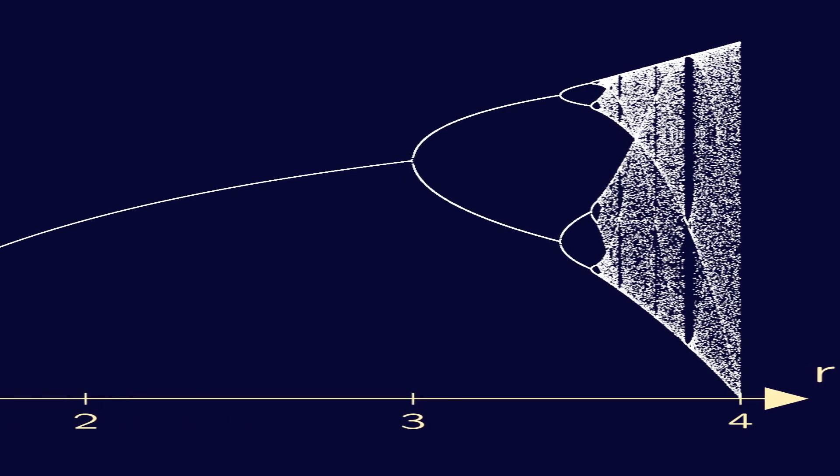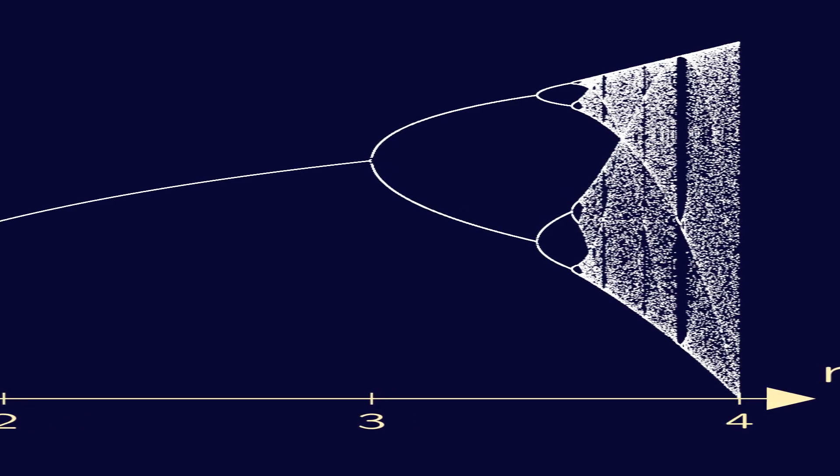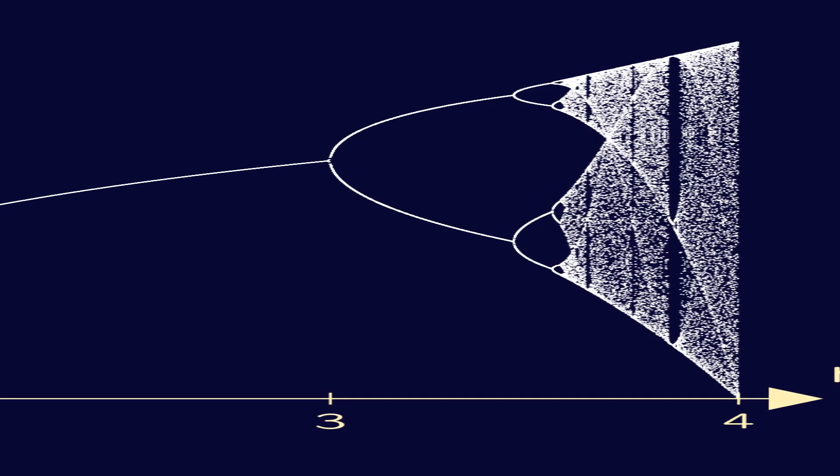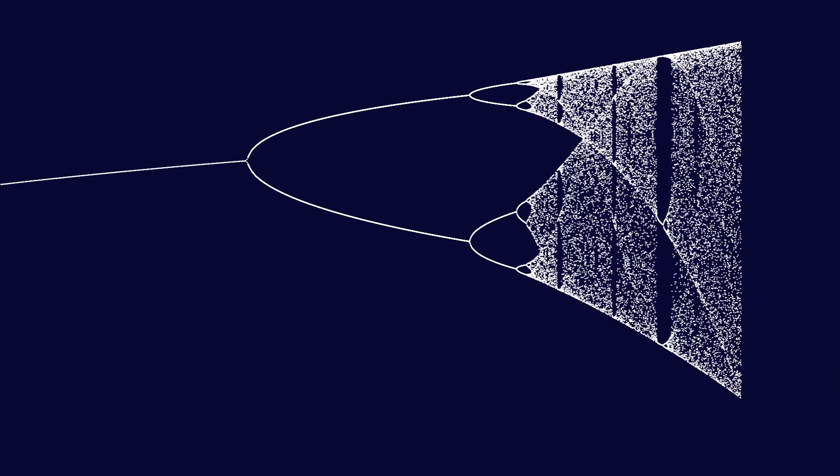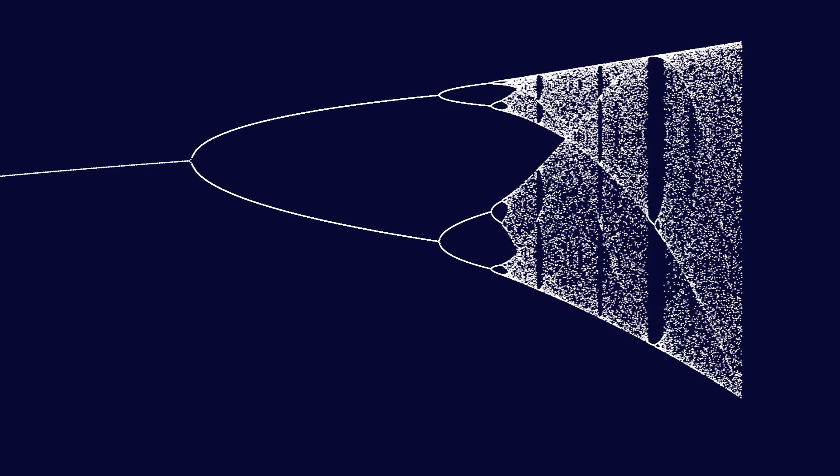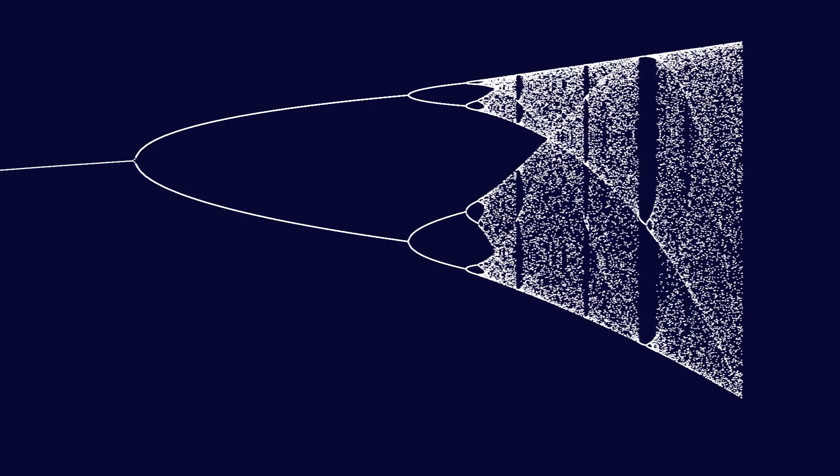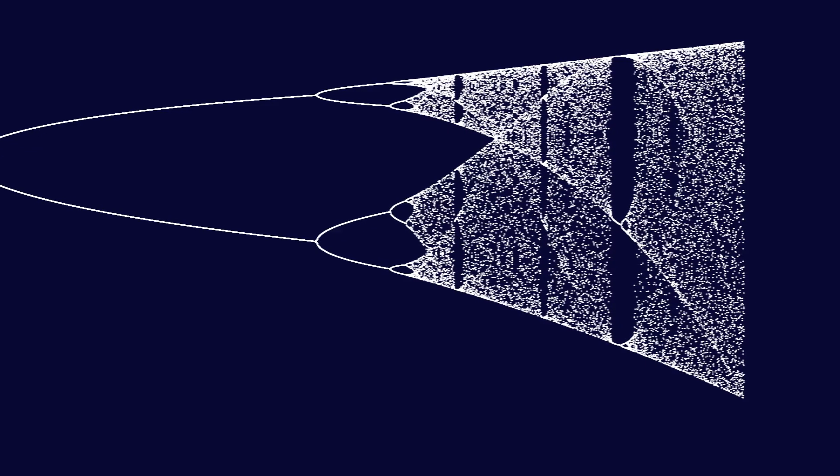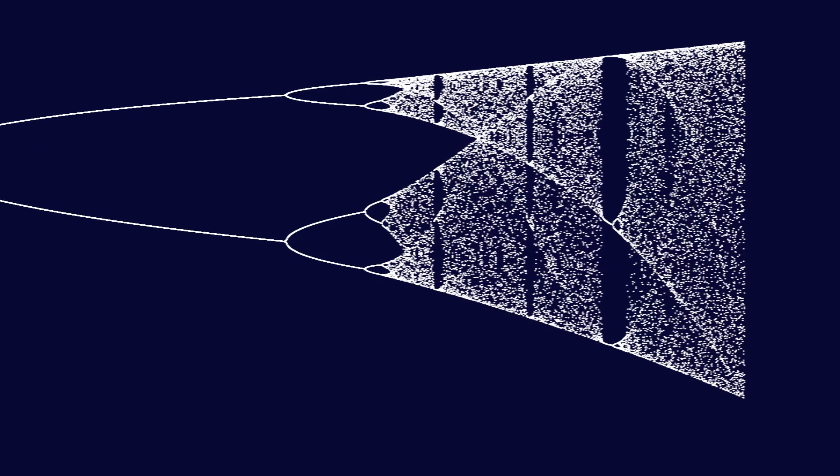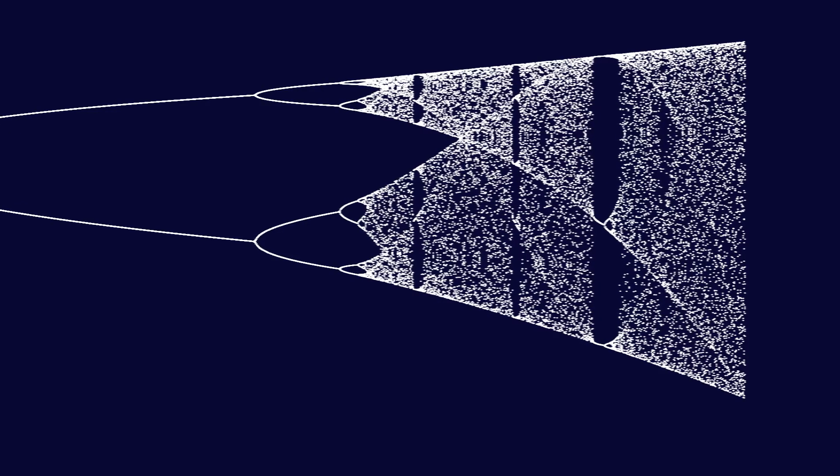Many videos could be made about this bifurcation diagram. And indeed, many have been. So I'll link to some in the description. In the next video, we will focus on a slightly different question. Why does chaos happen at all? And we'll find that chaos is not unusual. In fact, it's a mathematical necessity if the update map satisfies a simple condition.